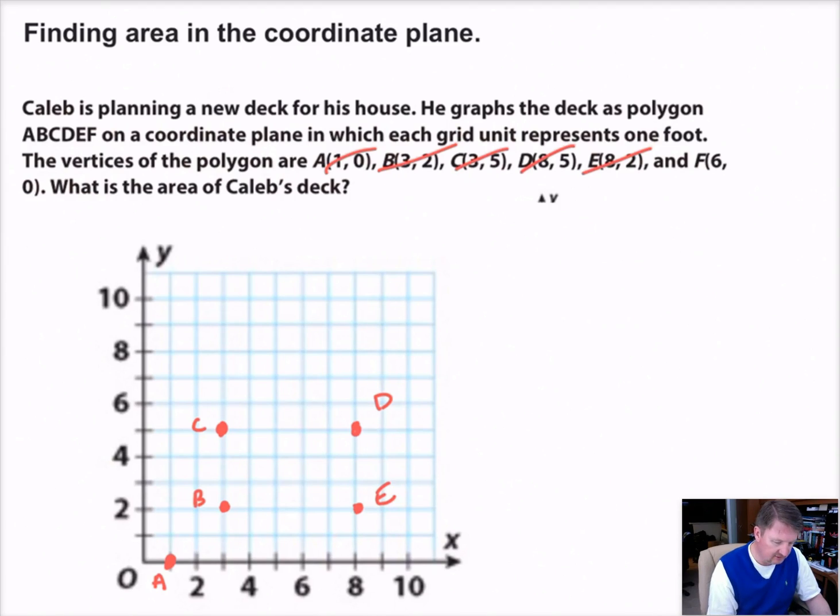And then F is point 6, 0. So 6, 0 is point F. And we finished up. So what's the area of the deck? Well, let's go ahead and connect them. A, B, C, D, E, F. Right there is our shape.